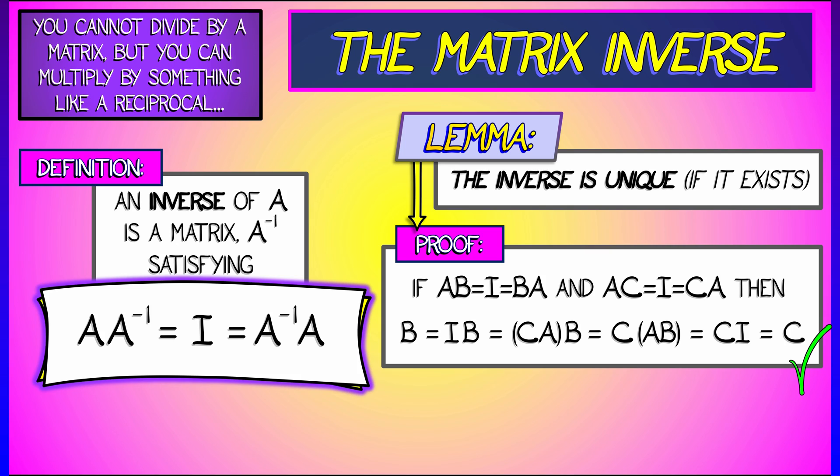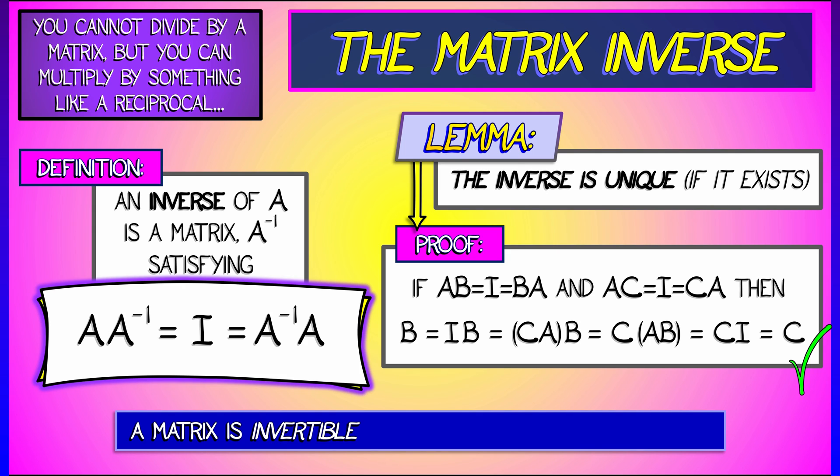So that's it. There's only one inverse to a matrix if, if indeed it exists. We say that a matrix is invertible if and only if that inverse exists.